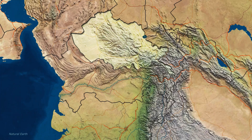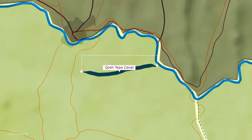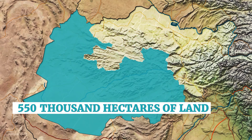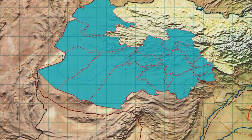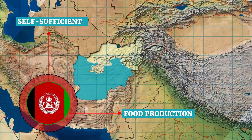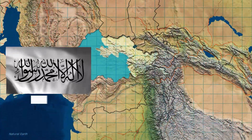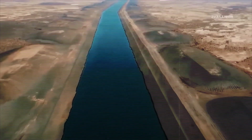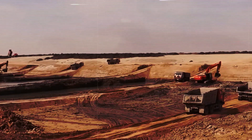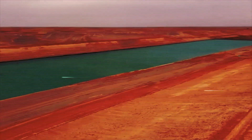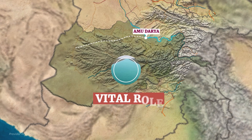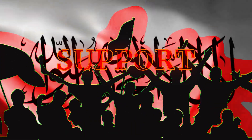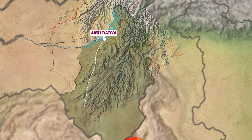According to Taliban officials, once the canal is completed — provisionally two years from now — it could irrigate 550,000 hectares of desert, effectively increasing Afghanistan's arable land by a third and even making the country self-sufficient in food production for the first time since the 1980s. For the internationally isolated Taliban, the canal represents a crucial test of its ability to govern. The canal will also benefit farmers, particularly those from the Pashtun community who are expected to migrate to the predominantly Uzbek and Tajik-inhabited region.